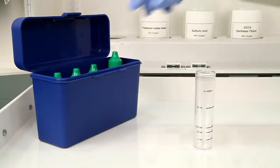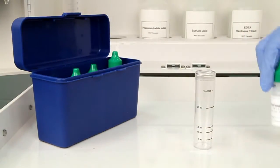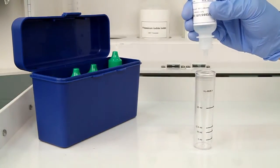Before adding your sample to the vial, add 10 drops of potassium iodide 10%. The bottle contains a dropper tip, so it's important to hold the bottle vertically to get a consistent drop size.